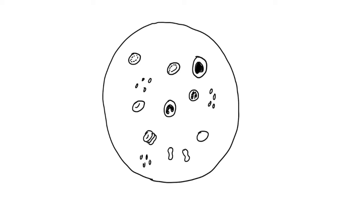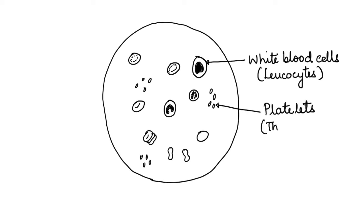This completes the drawing of the blood smear showing different types of cells. Now, label the large cell as the white blood cell or leukocyte, the small fragments as the platelets or thrombocytes.